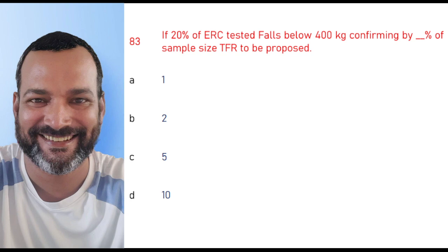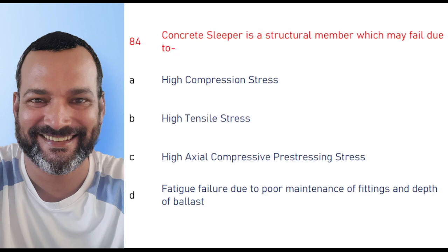If 20% of ERCs tested falls below 400 kg, confirmed by what percent of sample size — TFR to be proposed — and the right answer is 5%. Concrete sleeper is a structural member which may fail due to high compressive strength, high tensile stress, high axial compressive pre-stressing stress, or fatigue failure due to poor maintenance of fittings and depth of ballast. The right answer is option D: fatigue failure due to poor maintenance of fittings and depth of ballast.